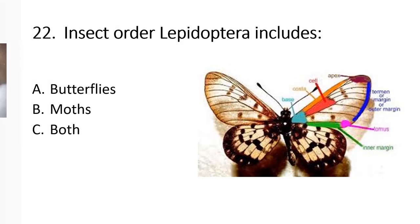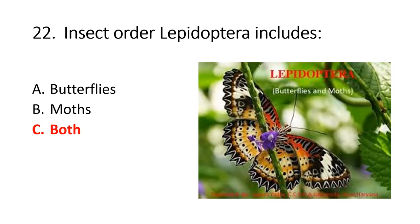Question 22: Insect order Lepidoptera includes... A: butterflies, B: moths, C: both. So the right option is C: both.